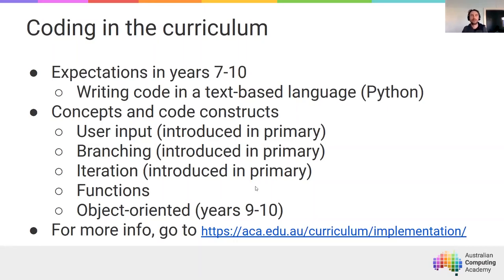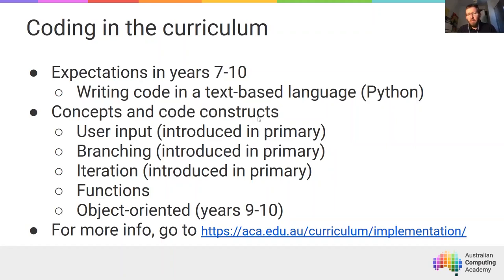User input, branching, and iteration — you basically can't write an interesting program without using some mixture of those things right up to year 11 and 12. The key new thing introduced in year 7 and 8 is implementing your own functions — not just calling other functions, but actually writing your own. In year 9 and 10, that broadens to modular programming and the object-oriented paradigm. One of the reasons we like Python is that it covers both procedural and object-oriented programming in a way that's quite accessible to kids.